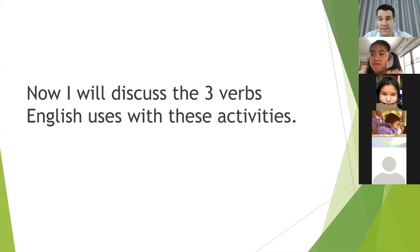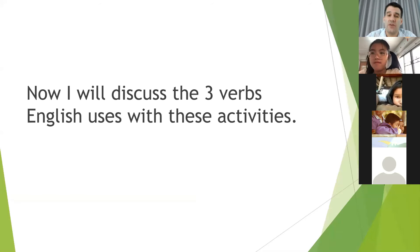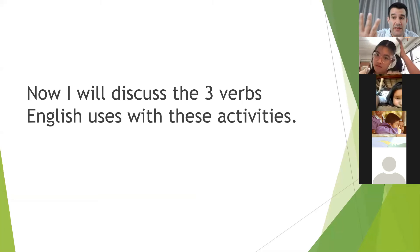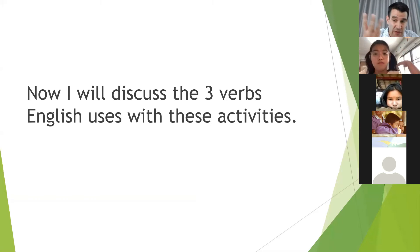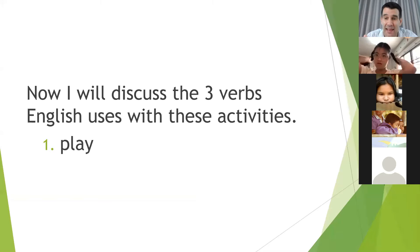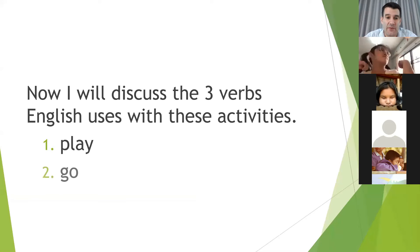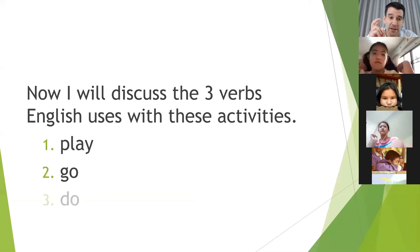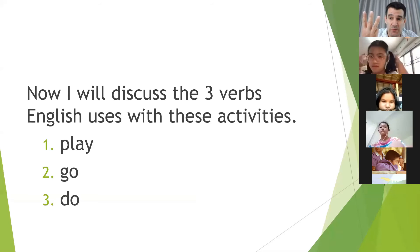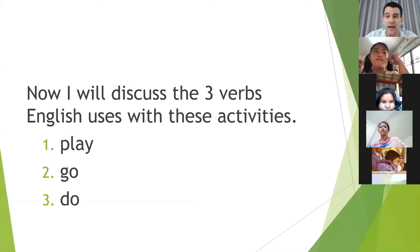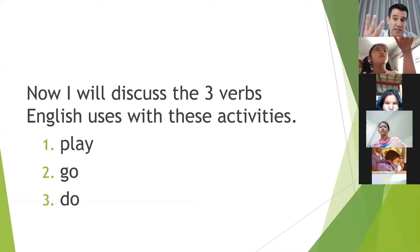With different sports, games, and activities, we use different verbs for each one. But it is one of three — there are only three verbs that we will use. The first one is 'play,' the second one is 'go,' and the third one is 'do.' So we will either play, go, or do a game, sport, or activity. There are only these three.